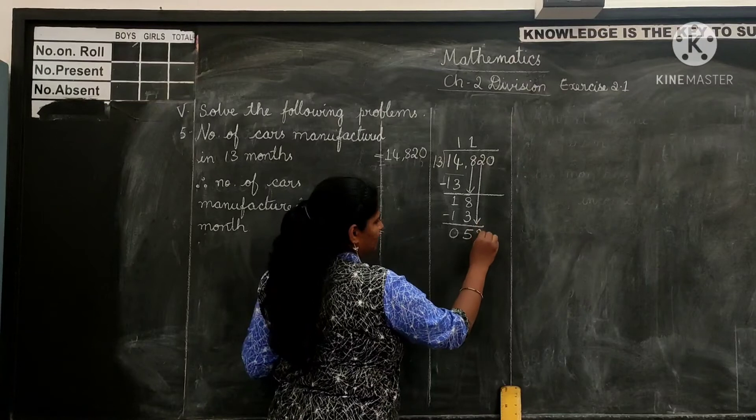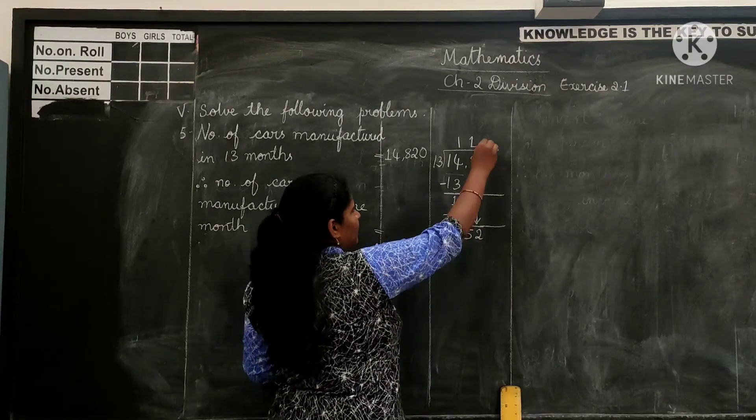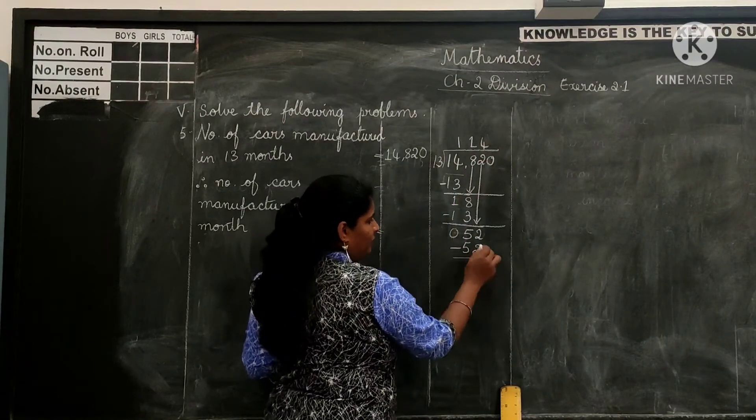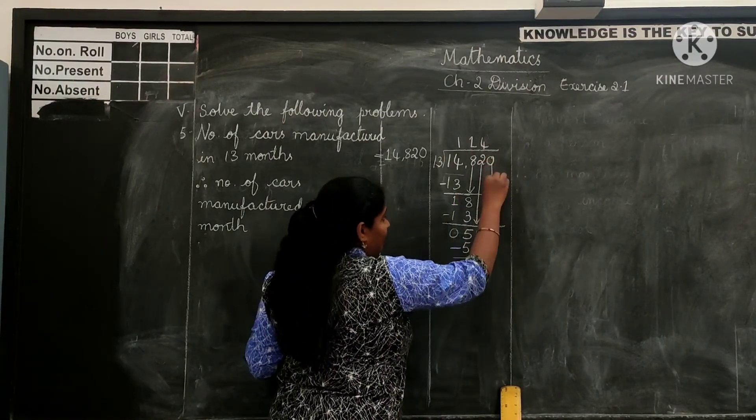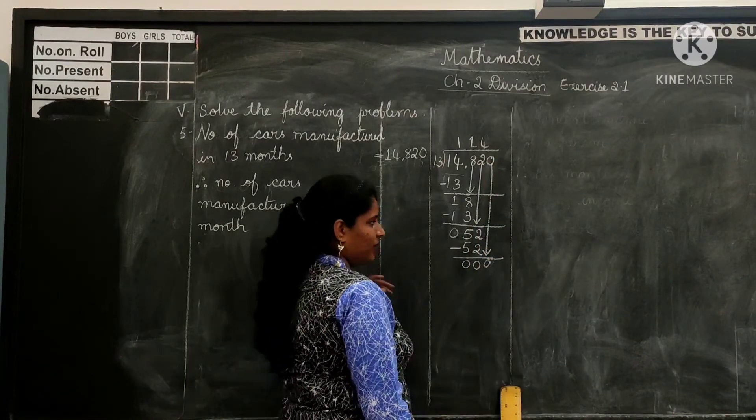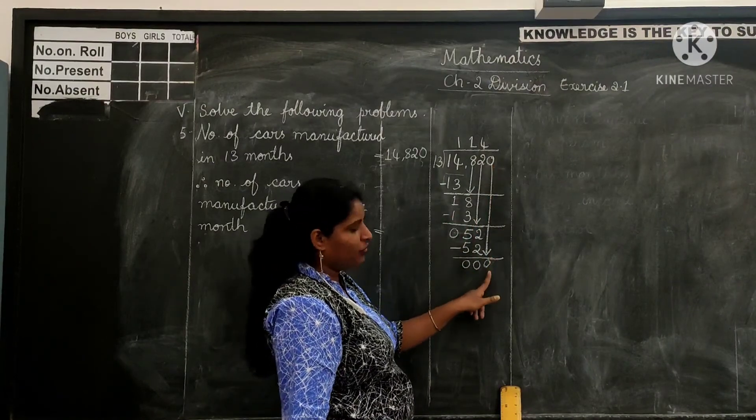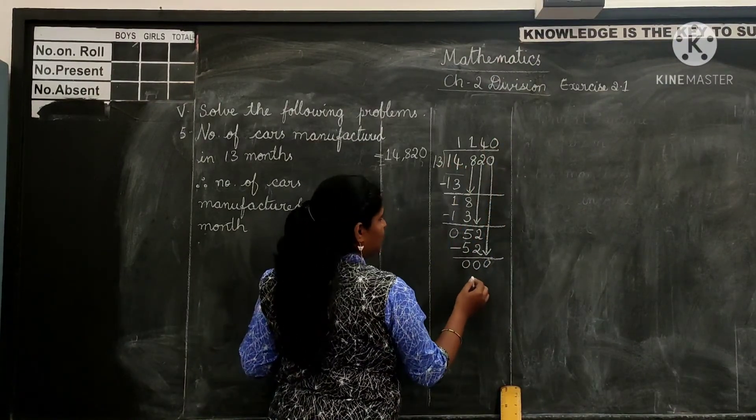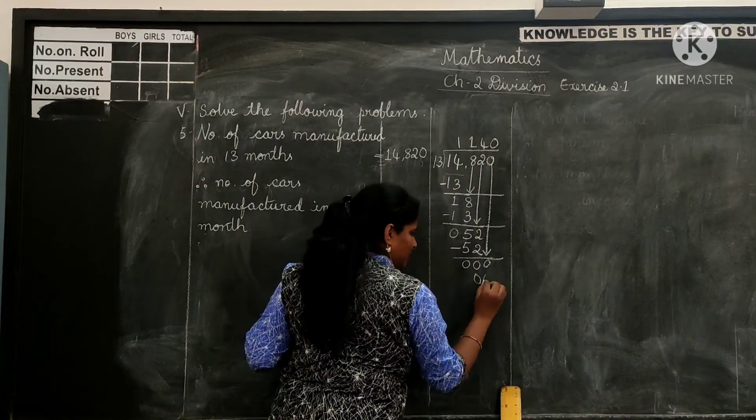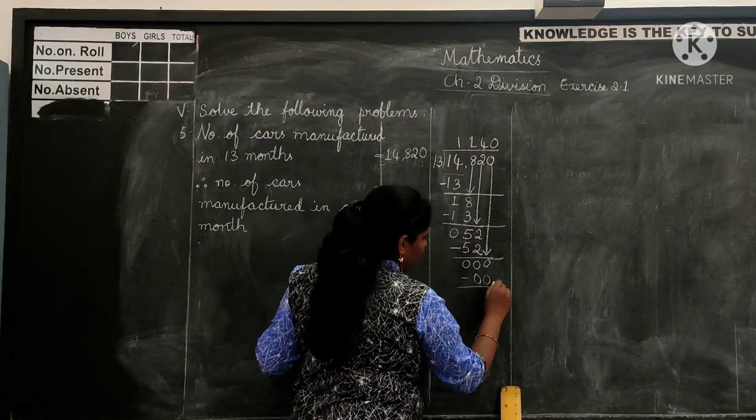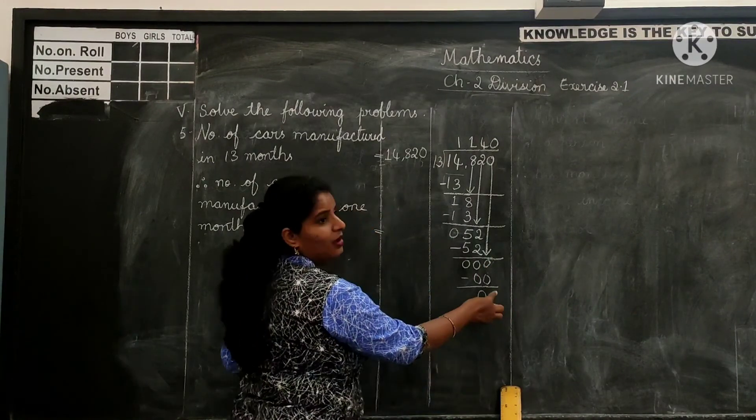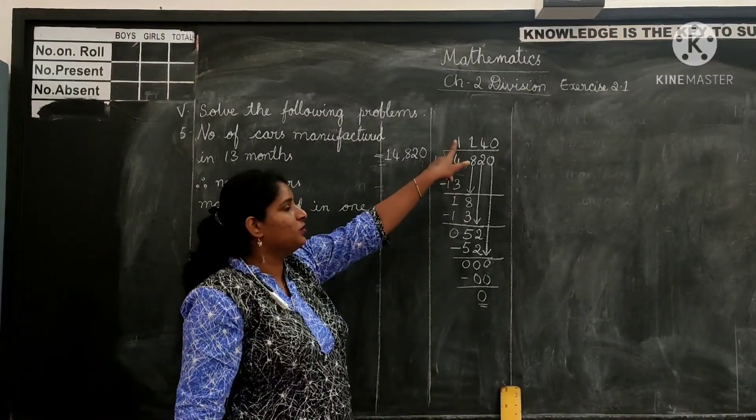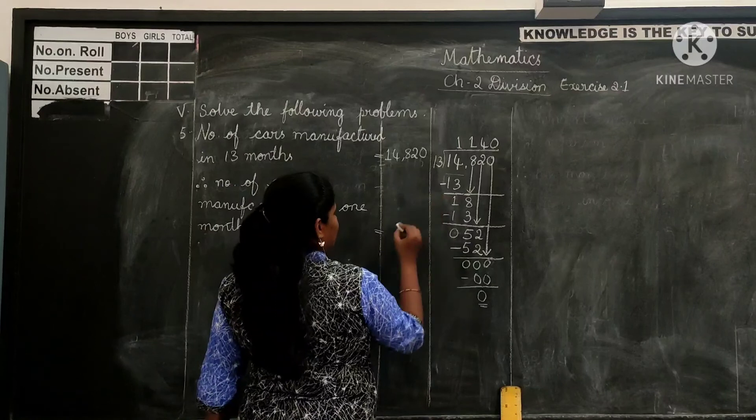Get 2 down. 13 how many times gives you 52? 13 four times gives you 52. 4 in quotient's place, 52 under dividend. 52 minus 52 gives you 0. Get the next number down. Now since you have got the number down, you have to perform division here. Since 0 is less than 13, add the 0 in quotient's place and perform the division. 13 times 0 gives you 0 itself. If anyone were multiplied by 0 gives you 0. Now subtracting from 0 gives you 0. Now this 0 can be the remainder. So that means this car manufacturing company manufactures 1,140 cars in one month.